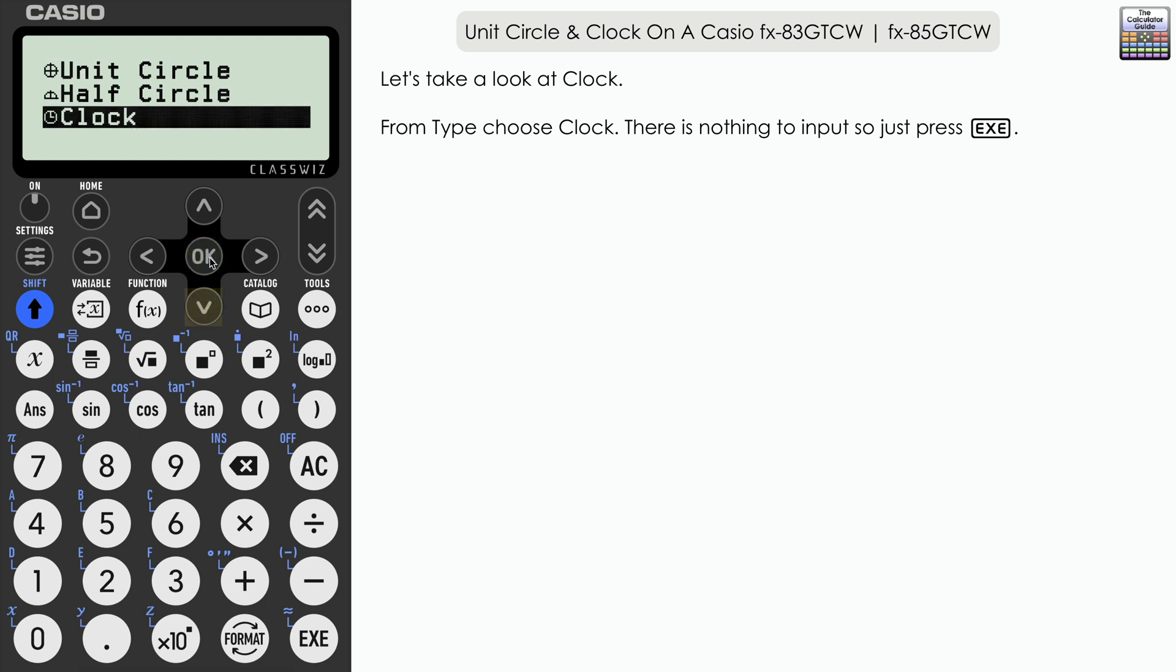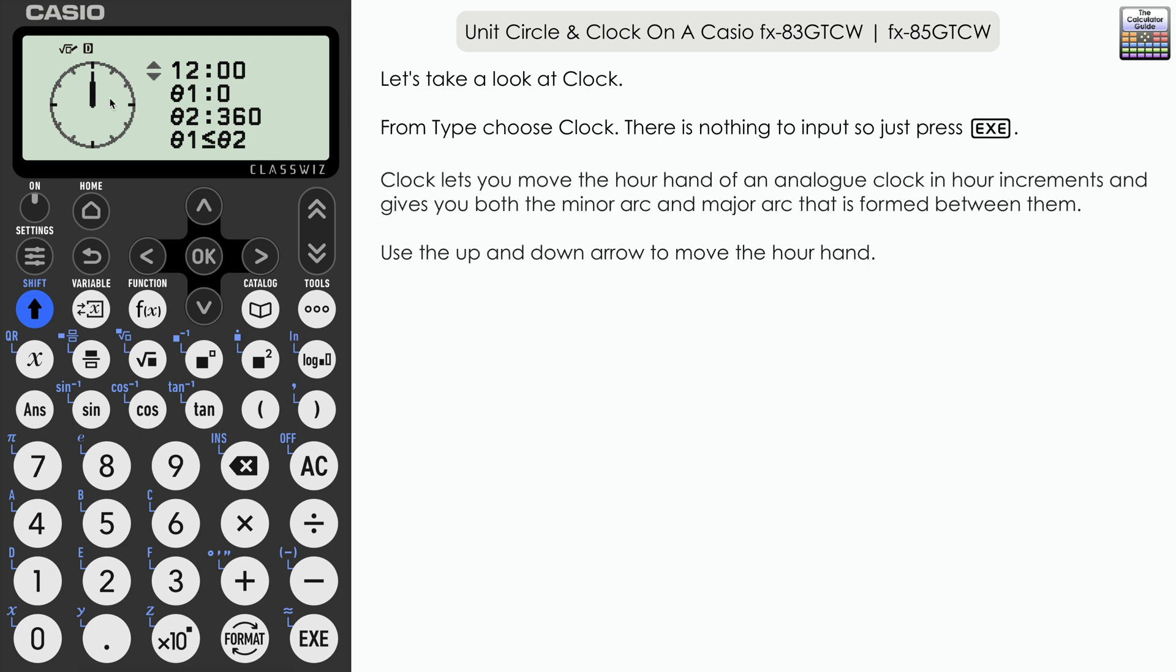Finally, let's go to type and take a look at the clock feature. We don't have any input options here, so just press execute. By default the hands of the clock are pointing at 12. What we're going to do is progress around in increments around the clock by using the arrow keys, and theta 1 will display the smaller angle, the minor angle formed, and theta 2 will display the major angle, the greater of the two angles as we go around.